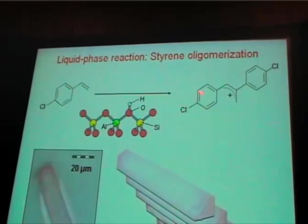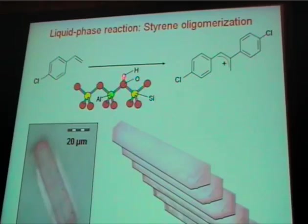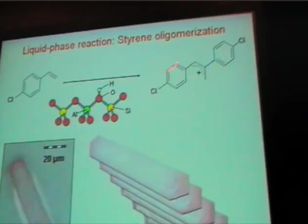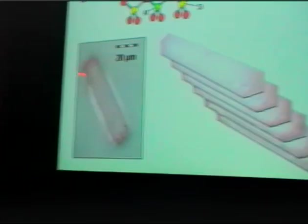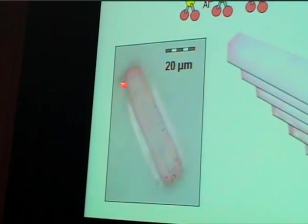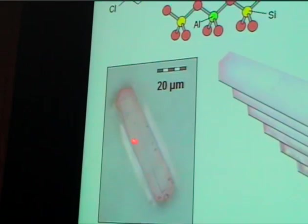Inspired by these colors, we thought: can we have a kind of reporter molecule — a molecule which gives a color and can be studied spectroscopically? The reaction we chose was a styrene oligomerization, which gives a dimer. This dimer is a carbocation, catalyzed by the acid sites of the zeolite, and gives a peculiar color. If there is a chloride on the styrene, you have a pink color. In correspondence with the methanol-to-olefin reaction where you saw coke formation, you see here a rim of pink color and a lighter pink in the middle.